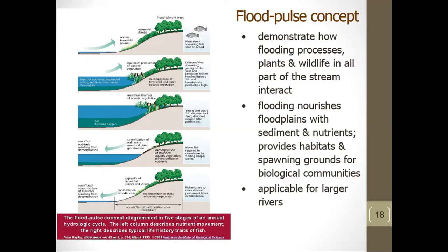The flood pulse concept demonstrates how flooding processes, plants, and wildlife in all parts of the stream corridor interact. Floodplains serve as essential focal points for the growth of riparian plant communities and the wildlife they support. Some riparian species such as willows and cottonwoods depend on flooding for regeneration. Flooding also provides floodplains with sediments and nutrients and provides habitat for invertebrate communities, amphibians, reptiles, and fish spawning. Applicable primarily to larger rivers, this concept shows that the predictable advance and retraction of water on the floodplain enhances biological productivity and maintains diversity.